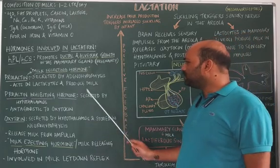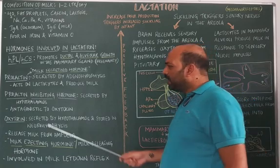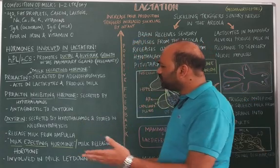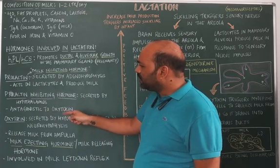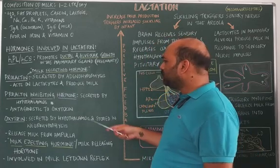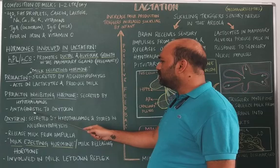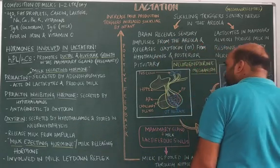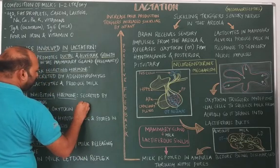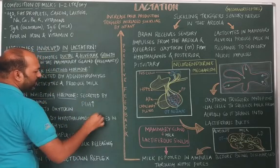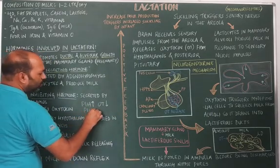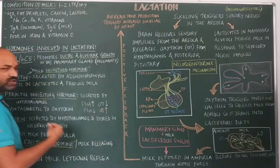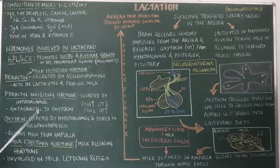The next hormone is prolactin inhibiting hormone, secreted from the hypothalamus. As the name suggests, it inhibits the release of prolactin. Prolactin inhibiting hormone is antagonistic to oxytocin, meaning when PIH levels are high, oxytocin levels are low, and when PIH levels are low, oxytocin levels are high.